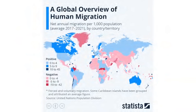Regarding human migration: immigration means people coming into a country, and emigration means people leaving a country. A world map of net immigration shows blue countries have more people coming in, and red countries have more people leaving. More developed countries like Western Europe, North America, and Australia see higher rates of immigration, while less developed countries in South Asia, East Asia, Western Africa, and Central America see higher rates of emigration.